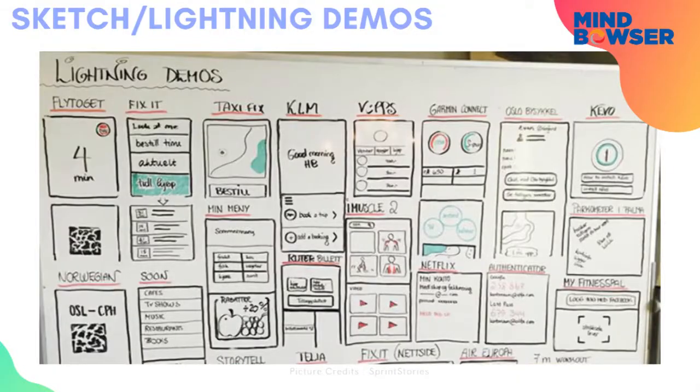The day starts with lightning demos. Someone from the Design Sprint puts out all the ideas they have thought of previously — how the screen should look, everything — and they put it out on a wall. It should look something like this. That's something for the entire team to look at and review, to get the ball rolling and look at the ideas.